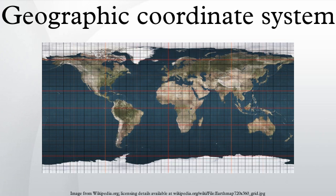A geographic coordinate system is a coordinate system that enables every location on the Earth to be specified by a set of numbers or letters.